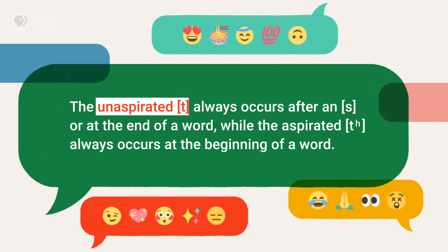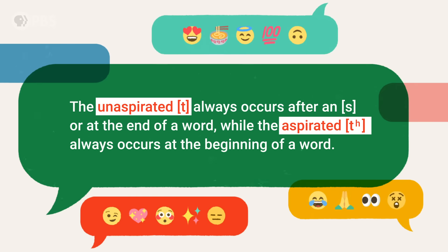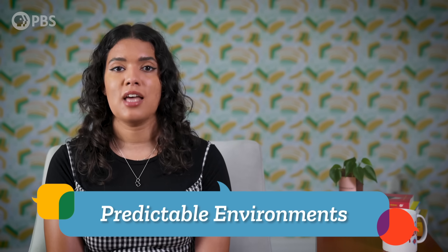Also, when looking at single-syllable words, we hear these two sounds in the same places each time. The unaspirated tuh always occurs after an S or at the end of a word, while the aspirated tuh always occurs at the beginning of a word. That's like seeing the white rabbit in the winter and the brown rabbit in the summer. The different versions of tuh appear in predictable environments — that's how we prove these two sounds are allophones of one phoneme.